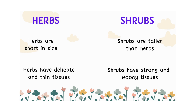Herbs are short in size, whereas shrubs are taller than herbs. Herbs have delicate and thin tissues, whereas shrubs have strong and woody tissues.